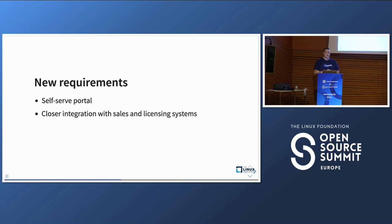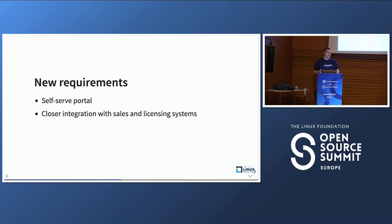Some time later, companies started adopting product-led growth, which came with requirements like subscribing for software on a self-serve portal without a manual sales process. Building a self-serve portal became the next milestone. We were also looking at onboarding customers, not just design partners, so closer integration with sales and licensing — and using those systems for granting access to specific products — became a new requirement. At this point we decided maybe we should build something of our own, because Harbor had its limitations and things like external authorization are not an option in Harbor.